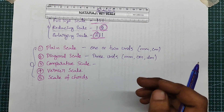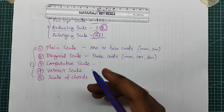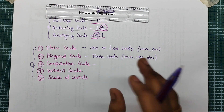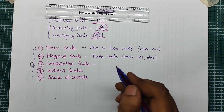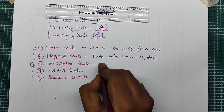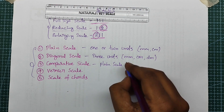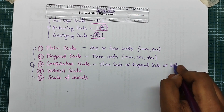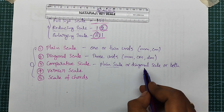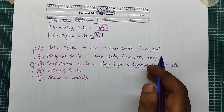In Comparative Scale, different units are compared. Once a distance has to be measured, there are numbers in different units. We can compare two types of units — for example, miles and kilometers. We draw two scales and compare them. Plane Scale and Diagonal Scale can also be compared.